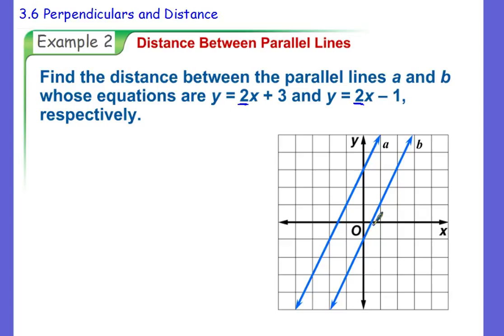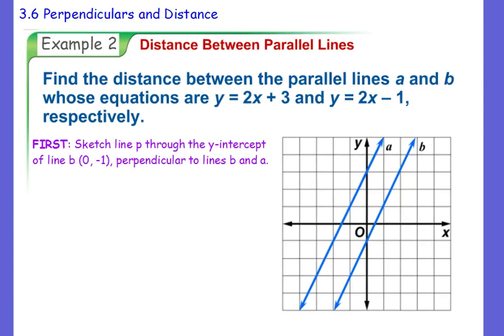So again, I'm going to break this down into steps. Okay, so if just looking at it, you want some perpendicular line drawn somewhere, and you can draw it anywhere. The more you do this, you'll be able to see what's going to be the easiest place to draw that line. And I'm going to give you guys some helpful hints here. So first off, I said sketch line P, that's what I'm going to call this, just gave it some letter. Sketch line P through the y-intercept of line B, which is right here at 0, -1.